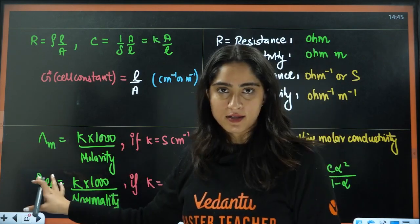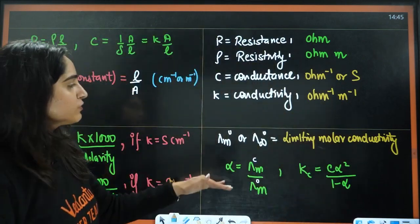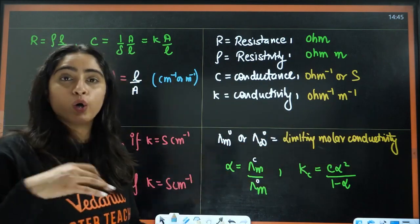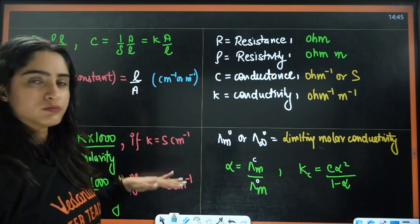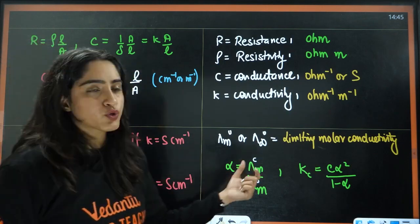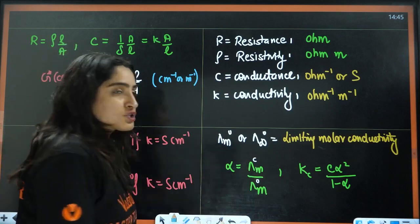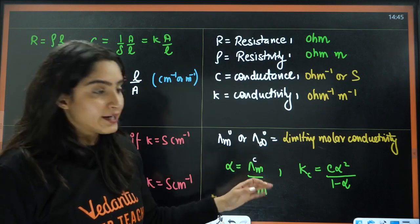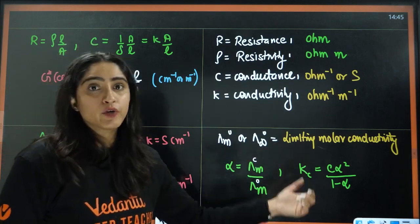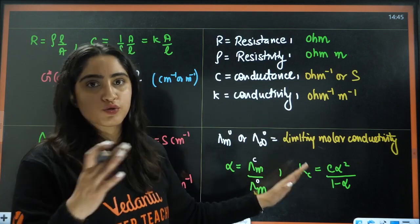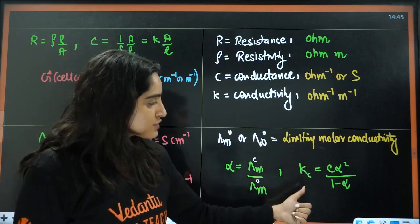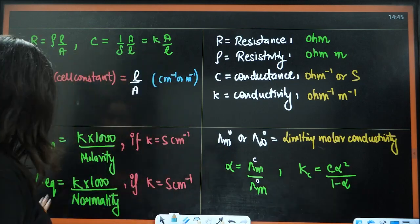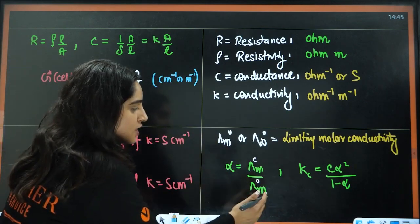Usually, molar conductivity is asked. Now, next we have infinite dilution — that is limiting molar conductivity. At infinite dilution, they will ask you to calculate this, and then calculate the degree of dissociation. Degree of dissociation is molar conductivity at concentration C divided by molar conductivity at infinite dilution — that is the limiting molar conductivity. From there, you calculate the dissociation constant K_c. The dissociation constant equals C alpha squared divided by (1 minus alpha).